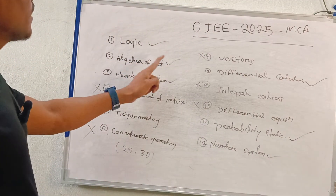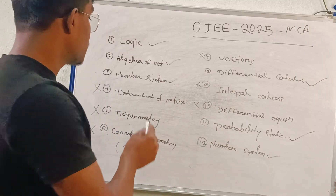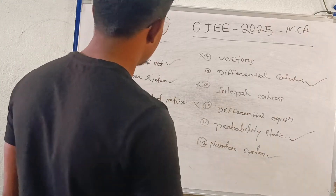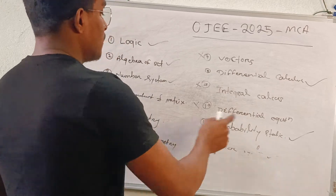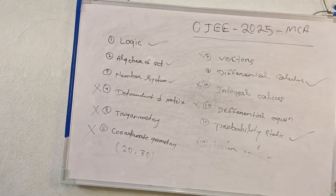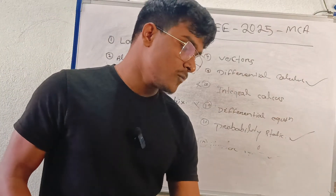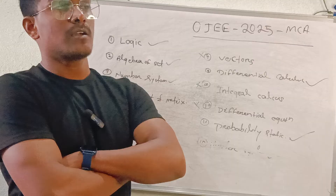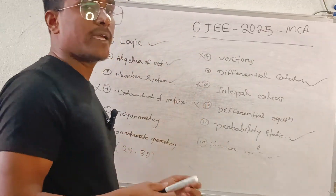So in total, counting the important ones: Logic, Algebraic Set, Number System, Differential Calculus, and Probability Statistics — that's about 5 to 6 important chapters. If you want to cover mathematics, I will discuss some of the mathematics. The number system is also there.